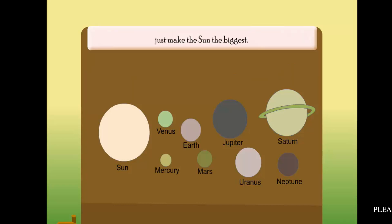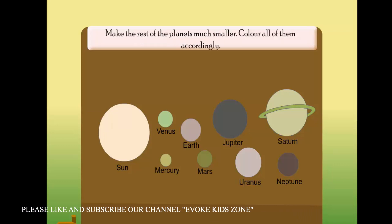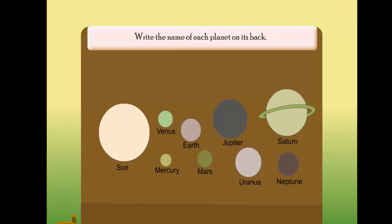Just make the Sun the biggest. Make Jupiter, Saturn, Uranus, and Neptune a bit smaller than the Sun. Make the rest of the planets much smaller. Color all of them accordingly and write the name of each planet on its back.